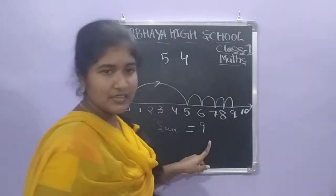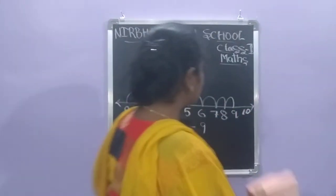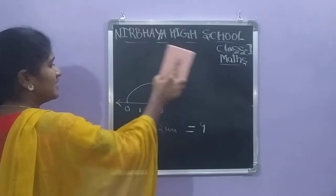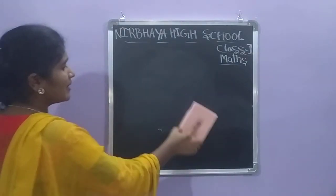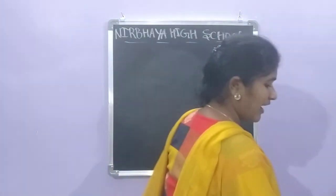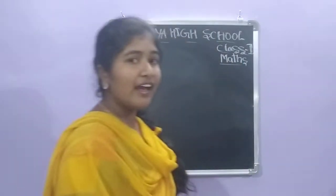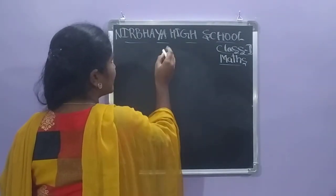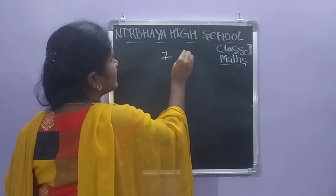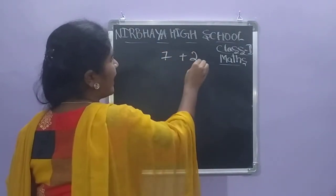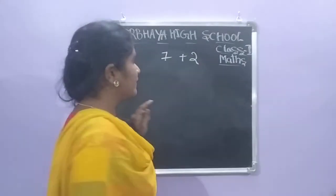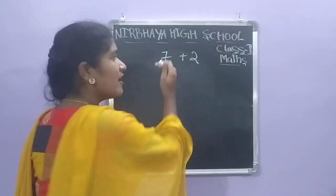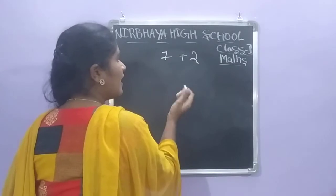What is the answer? Nine. Next, what is the last method? The vertical column method. In this method we write the numbers one below the other. For example, seven plus two we have to add.